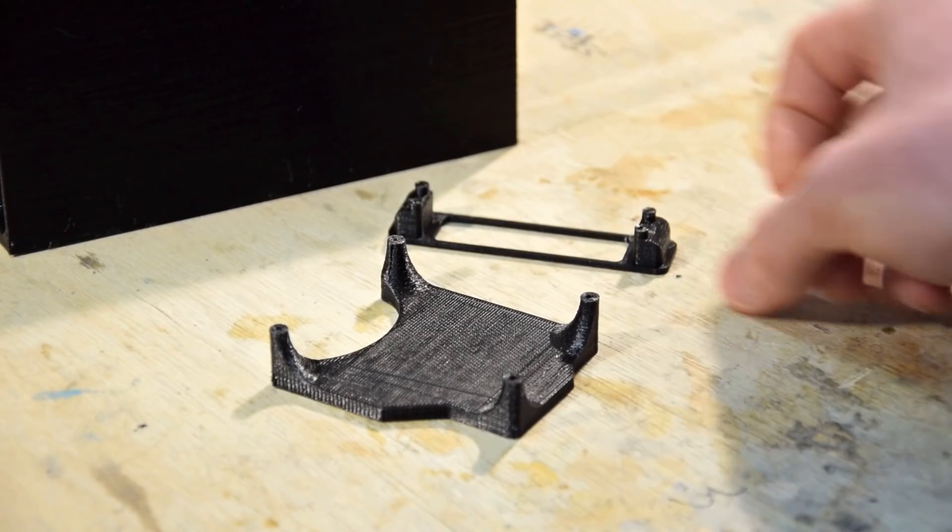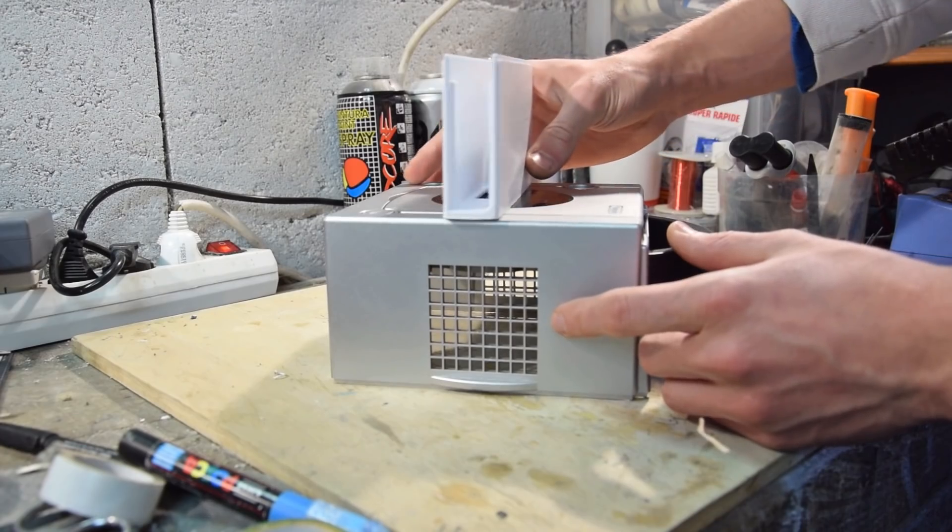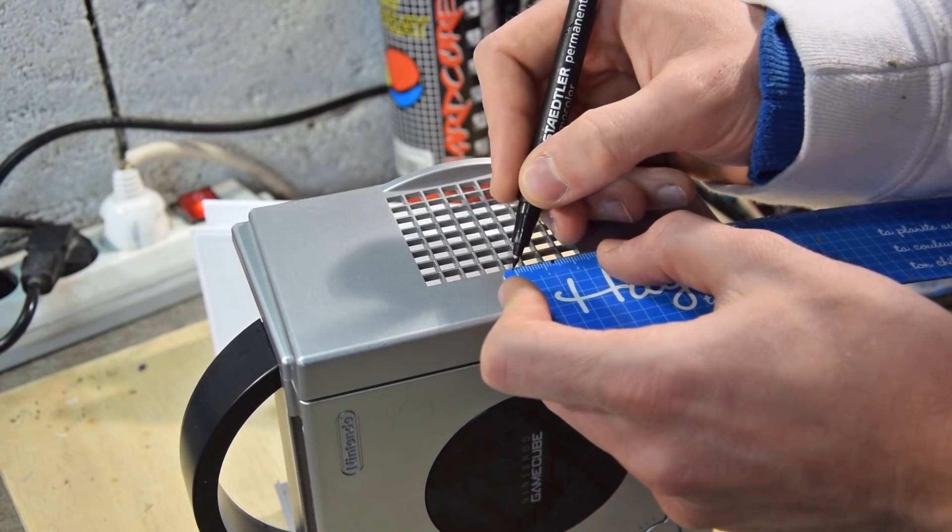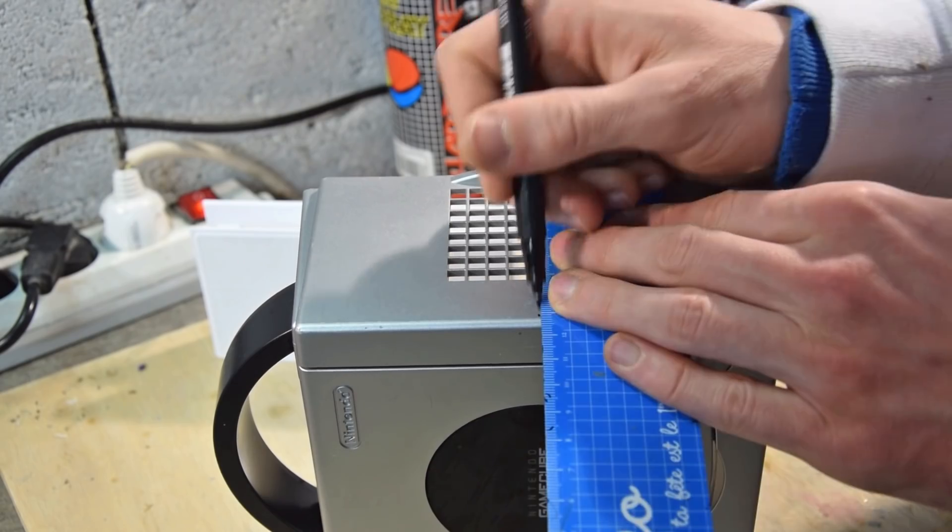Now that we have our final prints, we can move on to modifying the GameCube case to house them. We've already decided on the position of every component. We can just mark up the case with a pen and start cutting.